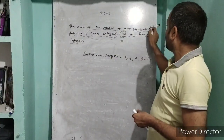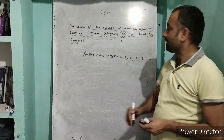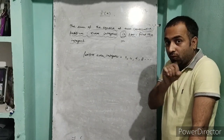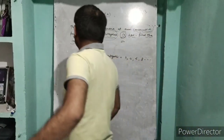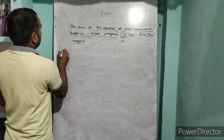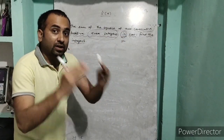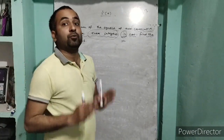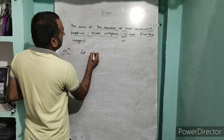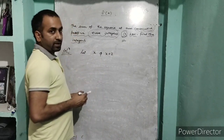Consecutive means one after the other — after 1 comes 2, after 2 comes 3, and so on, sequentially. The question asks for two consecutive positive even integers. You don't know what they are yet, so you have to suppose them. Let us suppose the two consecutive positive even integers. Now, note it is not x and x+1, it is x and x+2, because we are talking about even integers.